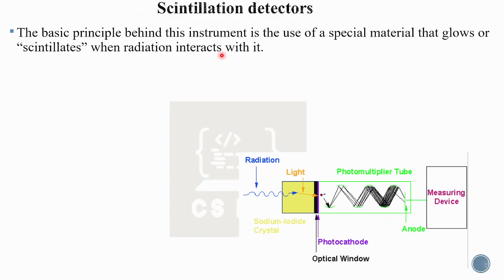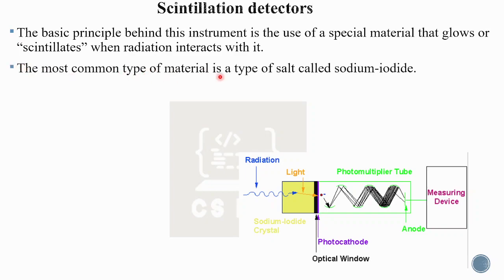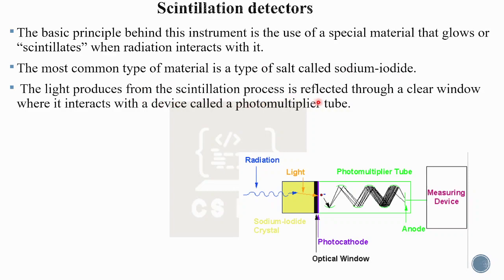The basic principle behind the scintillation detector is the use of a special material that glows or scintillates when radiation interacts with it. The most common type of scintillation material is a type of salt called sodium iodide. When radiation strikes the sodium iodide, it glows or scintillates. The light produced from the scintillation process is reflected through a clear window.